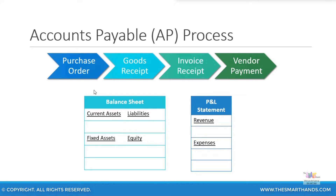Let's see how this will affect the Financial Accounting module. During the time of the purchase order, it's merely a commitment document, hence there is no financial entry taking place. At the time of goods receipt, you are going to get a physical inventory to your organization. It can come under your current assets, or if you purchase fixed assets using your purchase order, it will come under your fixed assets.